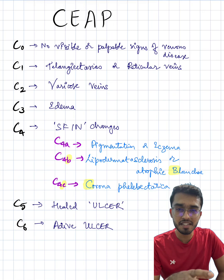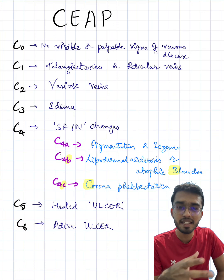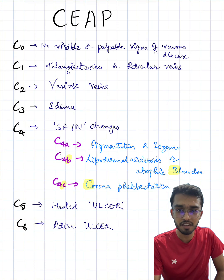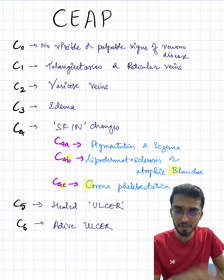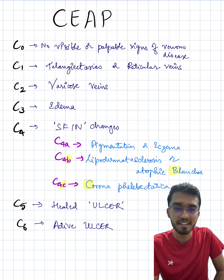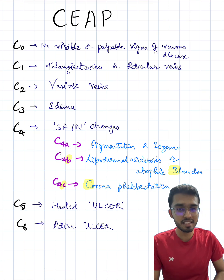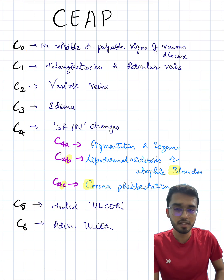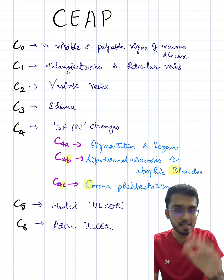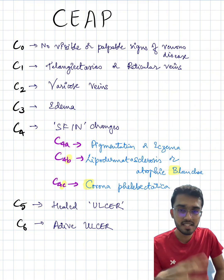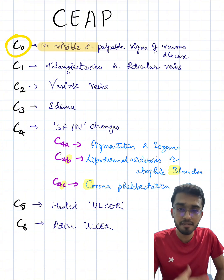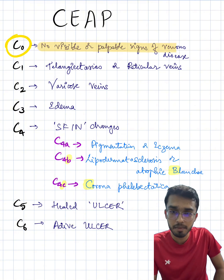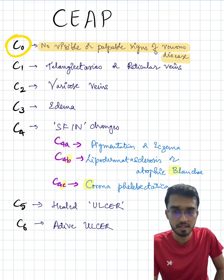In this video, we are going to discuss the clinical part of the CEAP classification of chronic venous disease using simple tricks so that you will never forget them again. Starting with Class 0 of CEAP — the number 0 implies nothing. So in Class 0 of CEAP, we do not have any visible or palpable signs of chronic venous disease.